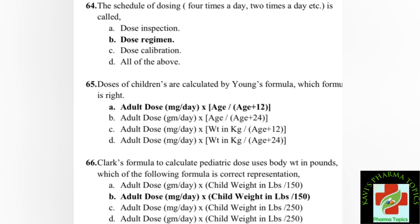Next question: the Clark formula to calculate pediatric doses uses body weight in pounds. The correct representation of the Clark formula is: adult dose (mg/day) multiplied by child weight in pounds, divided by 150. This is the right answer — option B — for the Clark formula.